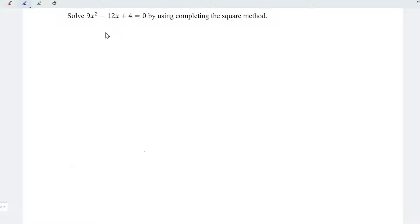Firstly, let's rewrite the equation. We have 9x² - 12x, constant moves to the right, plus move forward becomes minus, and we have -4.